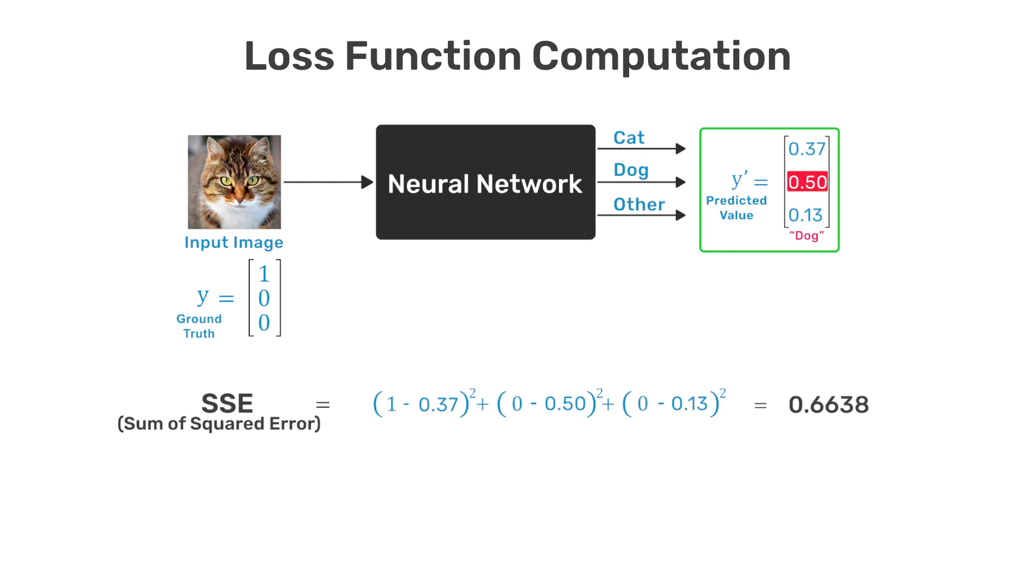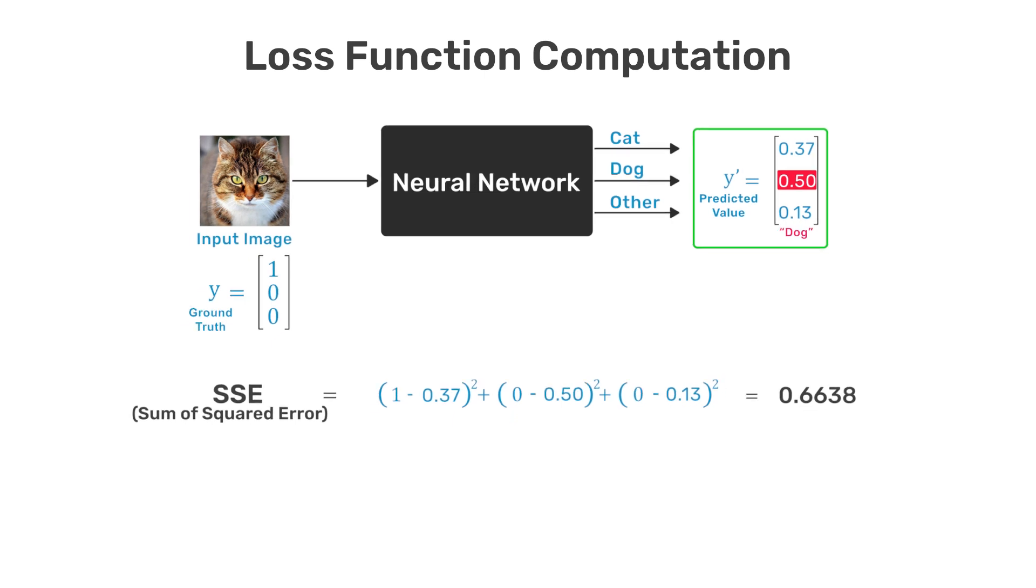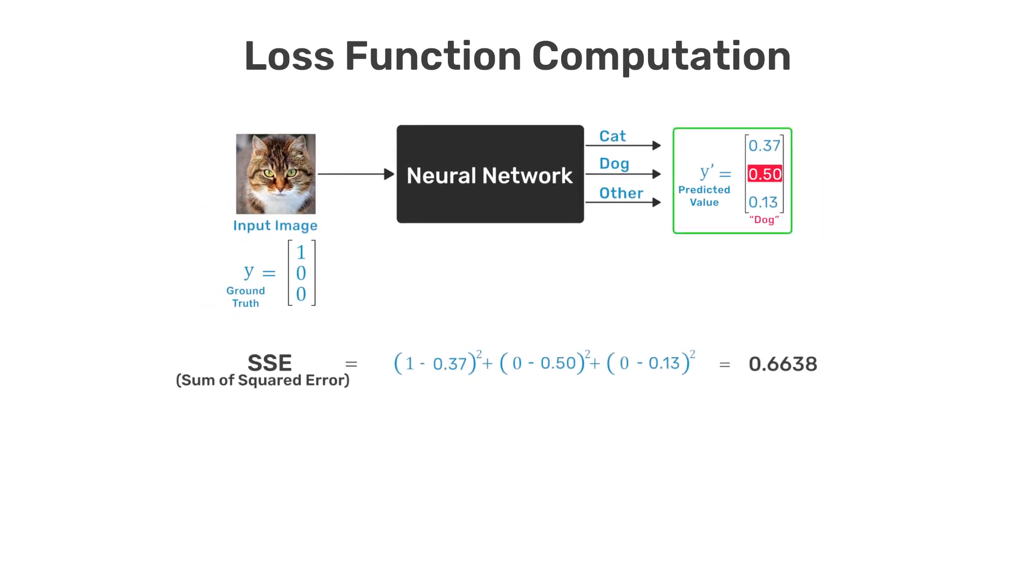When neural networks are trained in practice, many images are used to compute a loss before the network weights are updated, and therefore the next equation is often used to compute the mean squared error for a number of training images, which is just the mean of the sum of squared errors for all the images that were used.